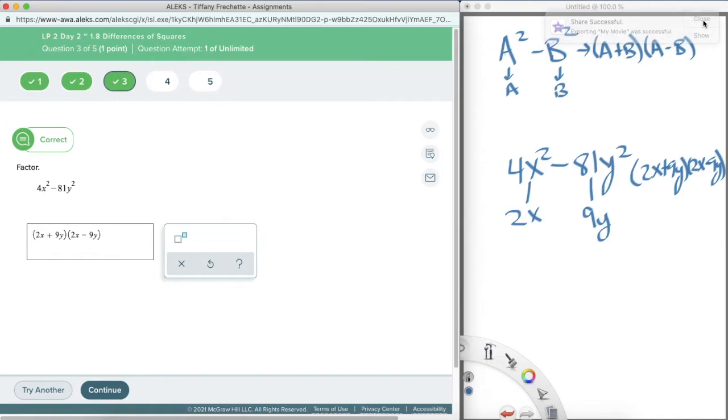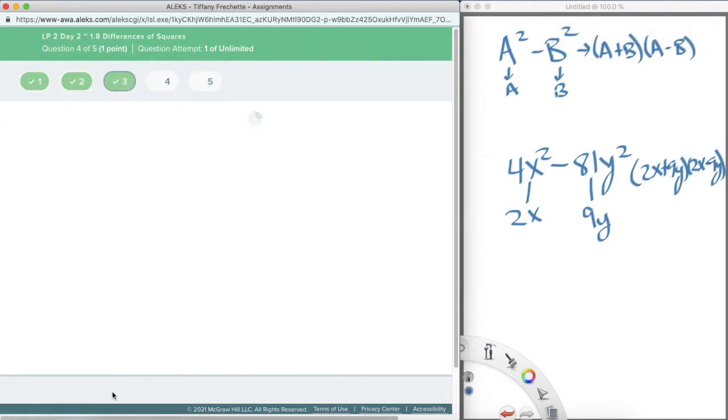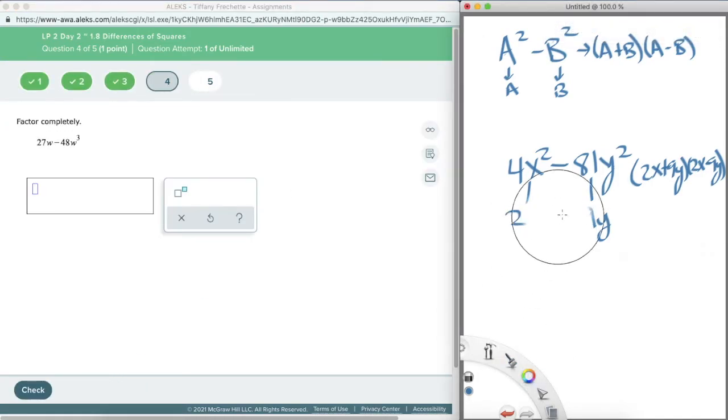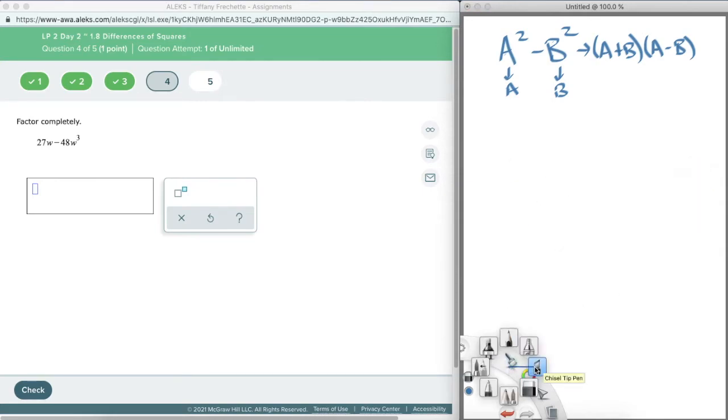So this is probably going to be one of our faster videos. All right. 27w minus 48w cubed. So it kind of looks like I can't factor this one with this pattern. Because 27 is not a square and neither is 48. But what I can do is I want to factor out a greatest common factor first and then see if there's going to be a difference in squares left over.